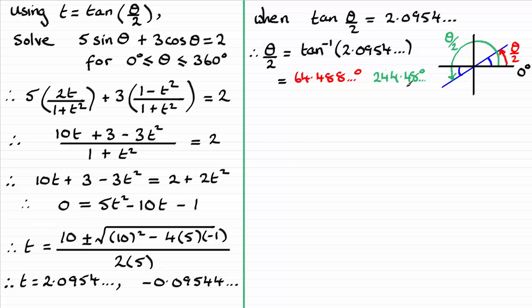Now to get theta I just need to double these results, and I can immediately see that doubling the green one is going to be out of the range of 360 degrees much more. So all I need to do is just double the 64.488, and if I do that then we end up with theta equaling 128.97 and so on degrees.